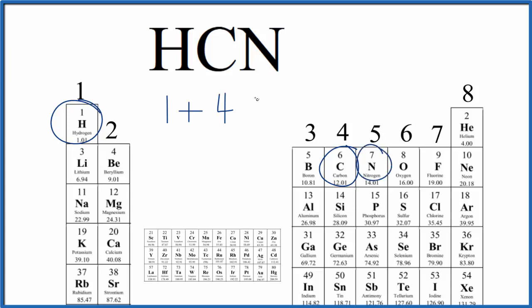and right next to it is nitrogen here. Group 15, sometimes called 5A, it has five valence electrons. Add these numbers up, we get a total of 10 valence electrons for HCN, hydrogen cyanide.